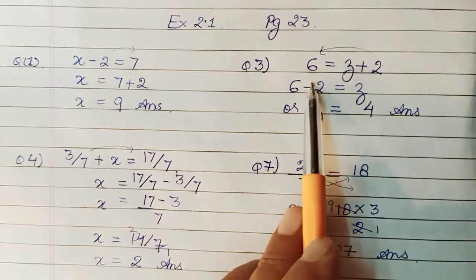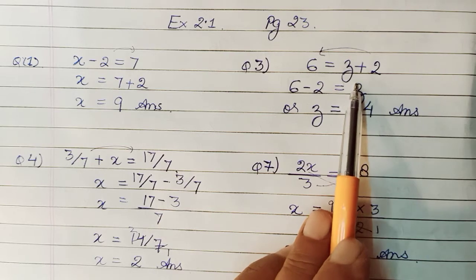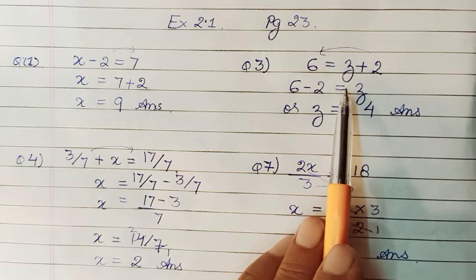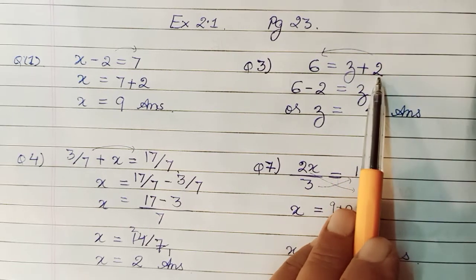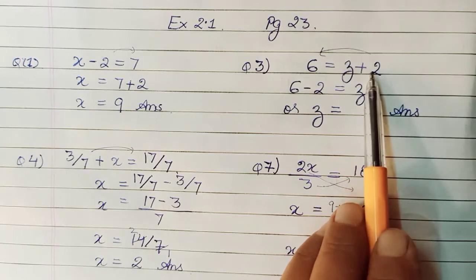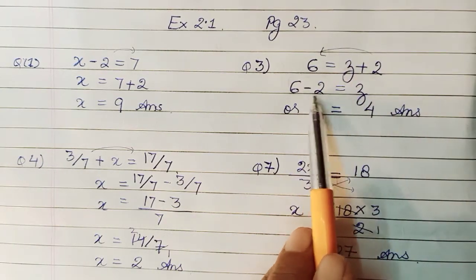Then in the next one, it was 6 equals z plus 2. Solving this means finding this unknown z. As I said, variable can be anything, x, y, z, p, q, r, a, b, c, anything. So 2 has to be taken away from here to get only z. So to take that 2 away, we will have to do minus 2. So this will go to the other side as minus 2.